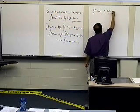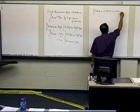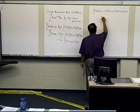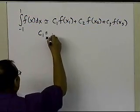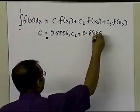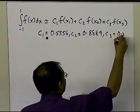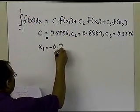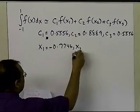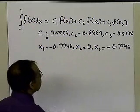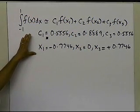The three-point Gauss quadrature rule is given by c1·f(x1) + c2·f(x2) + c3·f(x3). The values are: c1 = 0.5556, c2 = 0.8889, c3 = 0.5556, x1 = −0.7746, x2 = 0, and x3 = +0.7746. These values are taken from a handbook or textbook for the three-point Gauss quadrature rule.